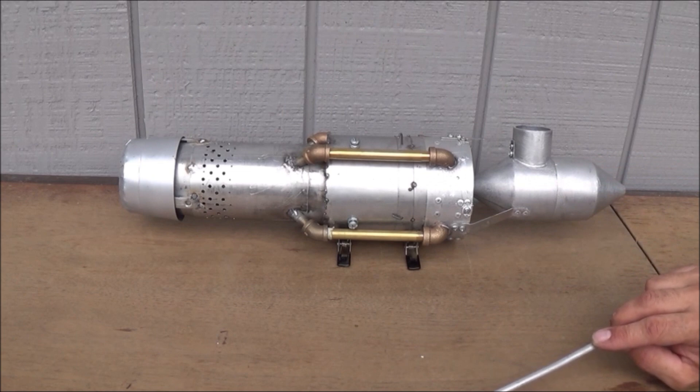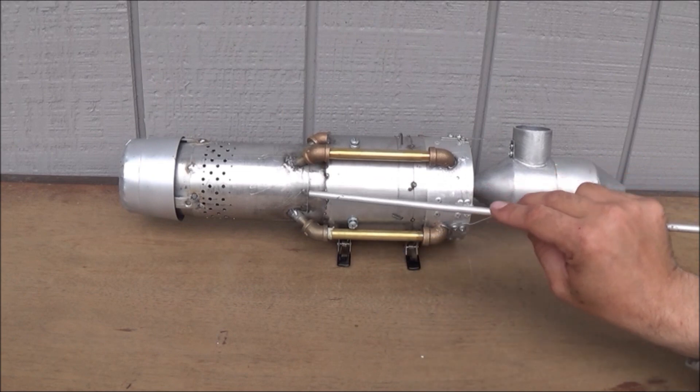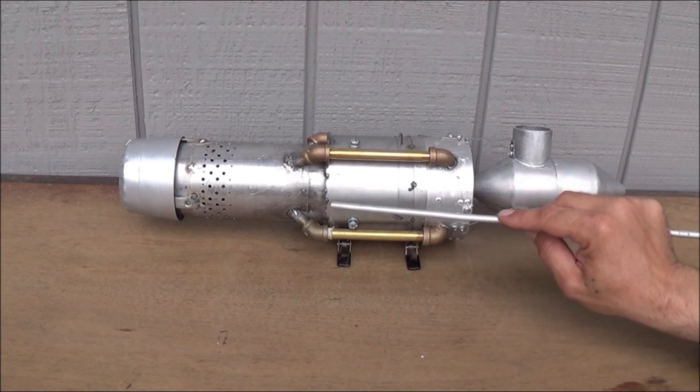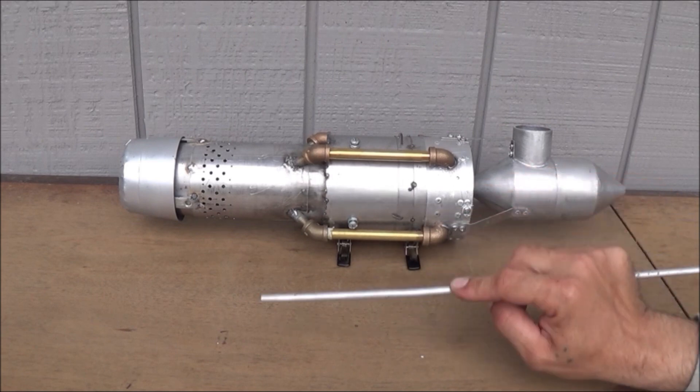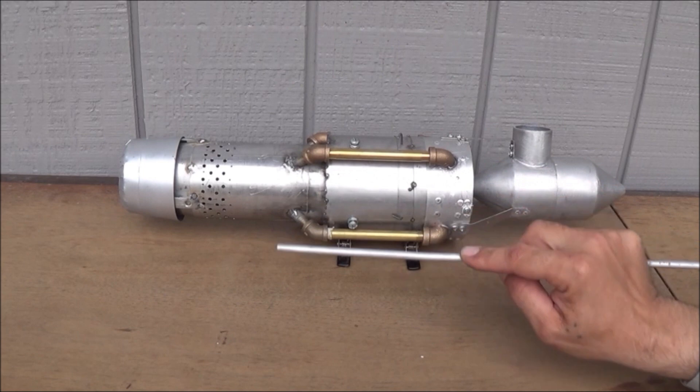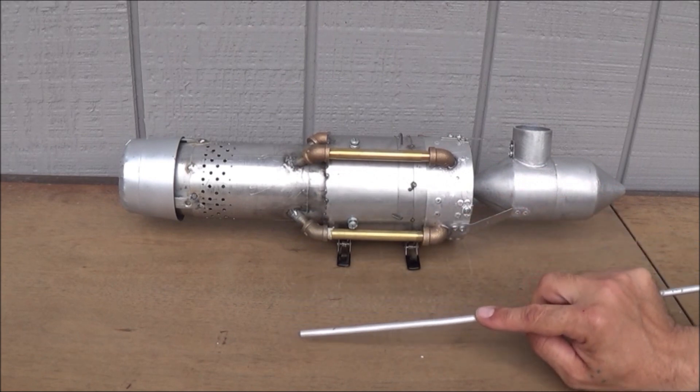What we have that's different on this engine is that at the aft side or the backside of our turbojet engine we have a ramjet engine installed just like the Pratt & Whitney engine.